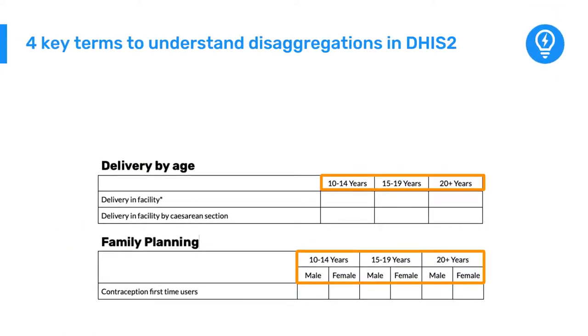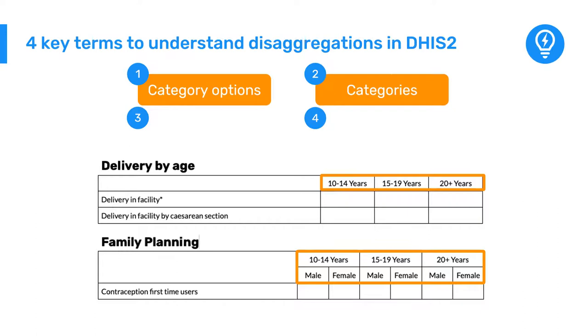To understand how disaggregations work in DHIS2, you first need to familiarize yourself with four key terms and how they relate to one another: category options, categories, category combinations, and category option combinations.